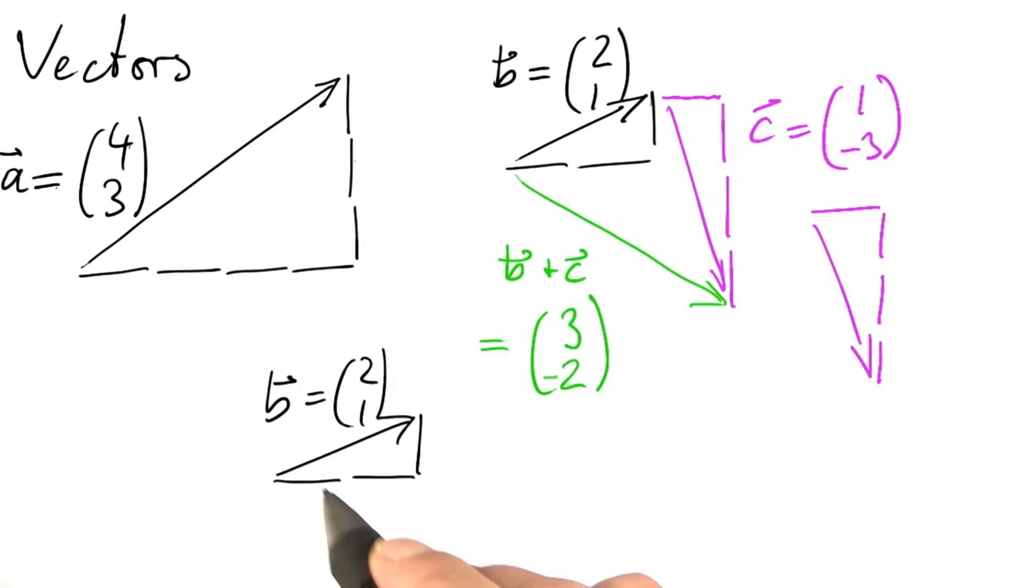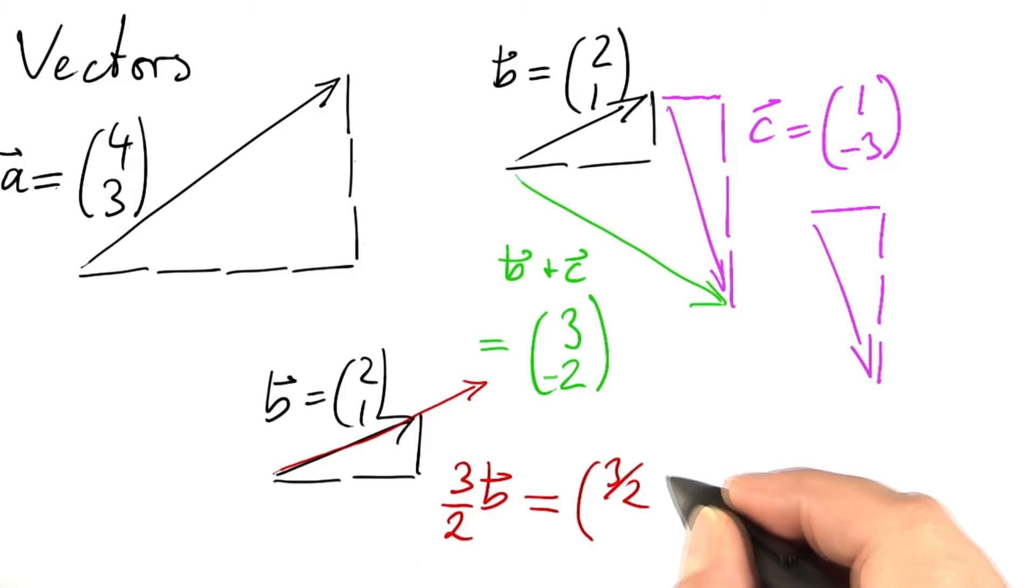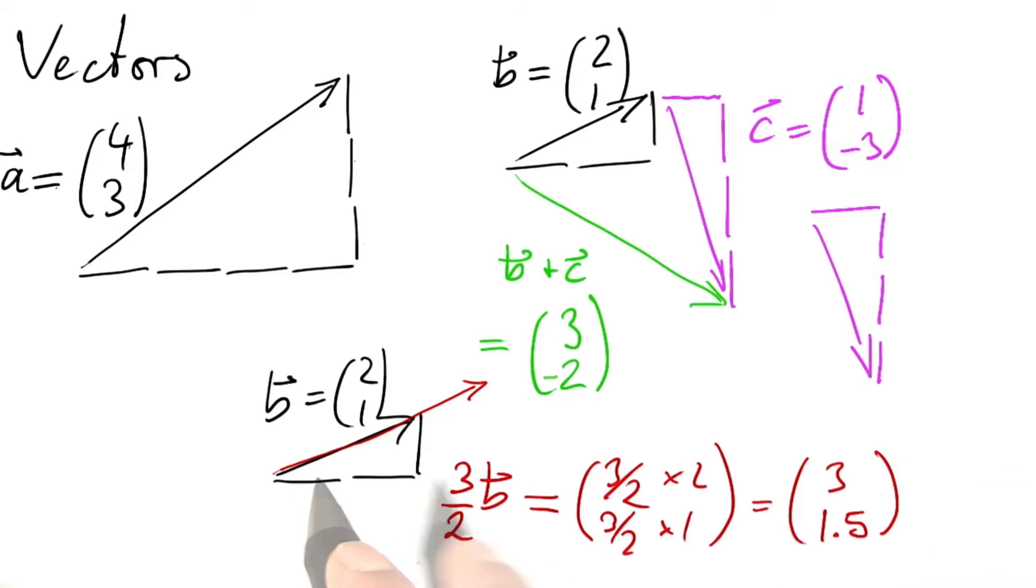And there's a second operation we can do. We can multiply vectors with numbers. For instance, if I want to multiply this vector b by 3 halves, I get an arrow in the same direction, but with 50% more length. I can do that in components as well. So what I get is 3 halves times 2 and 3 halves times 1, which is 3 and 1.5. Obviously, 3 units to the right, 1.5 units up.